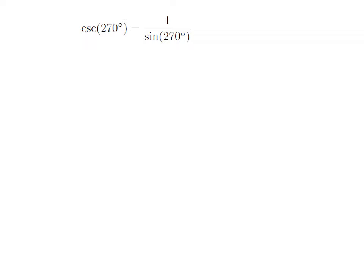As we know, cosecant of theta is equal to 1 upon sine of theta. So, cosecant of 270 degrees is equal to 1 divided by sine of 270 degrees.